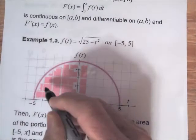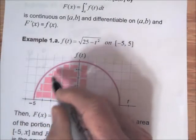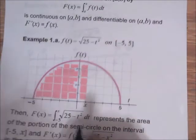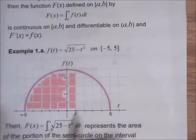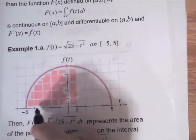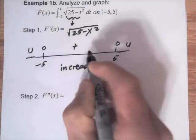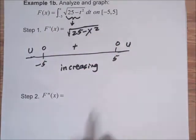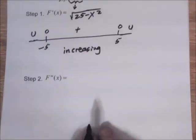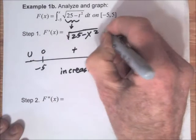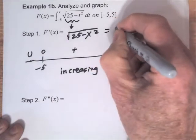Unlike little f, which was increasing from minus 5 to 0 and then decreasing, capital F — which represents the area between minus 5 and x — is increasing on the entire interval. For the second derivative, let's express this in terms of exponents: this is 25 minus x squared to the one-half power.